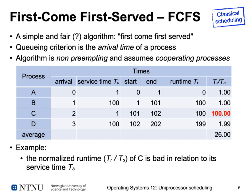The first scheduling algorithm is called FCFS — First Come, First Serve. It is a very simple algorithm. The queueing criterion is the arrival time of a process: processes that arrive later are put to the back of the ready queue. This algorithm is non-preempting and assumes cooperating processes.